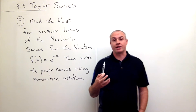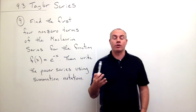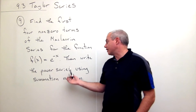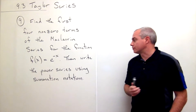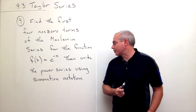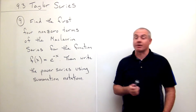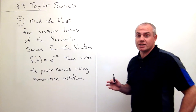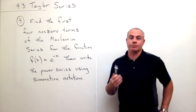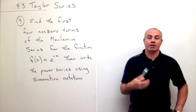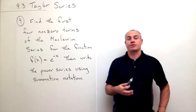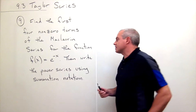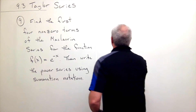So we're going to start out by finding the first four non-zero terms and then we're going to write the power series using summation notation. So the first thing that I do when I'm trying to find a Maclaurin series or a Taylor series is I write down the function.